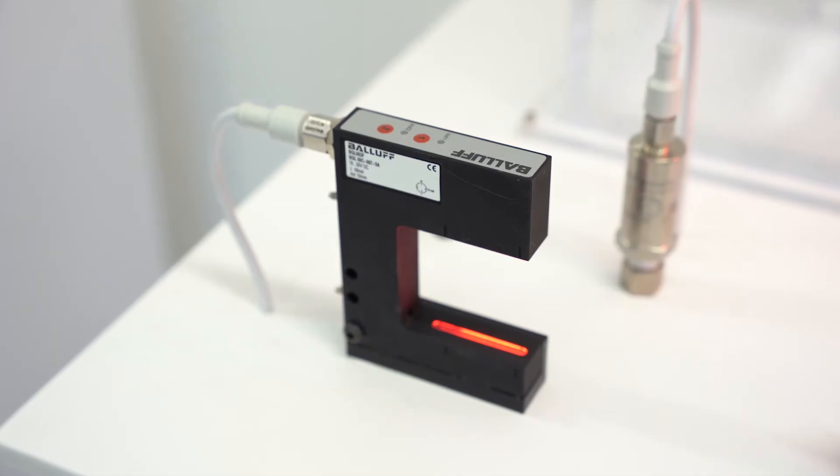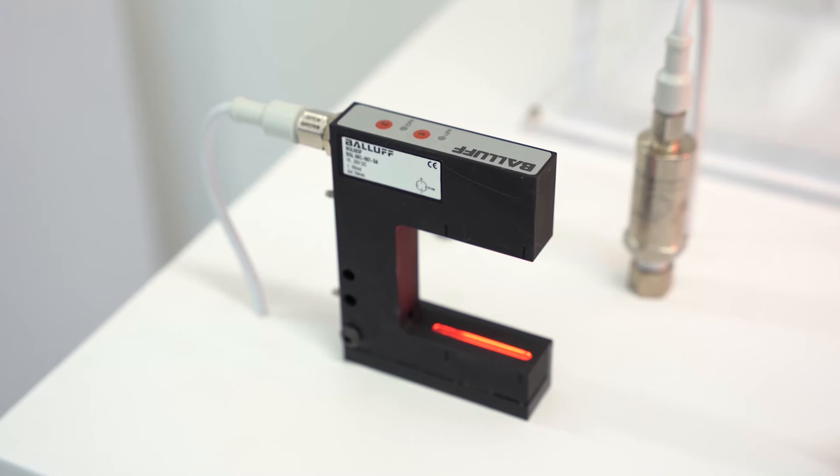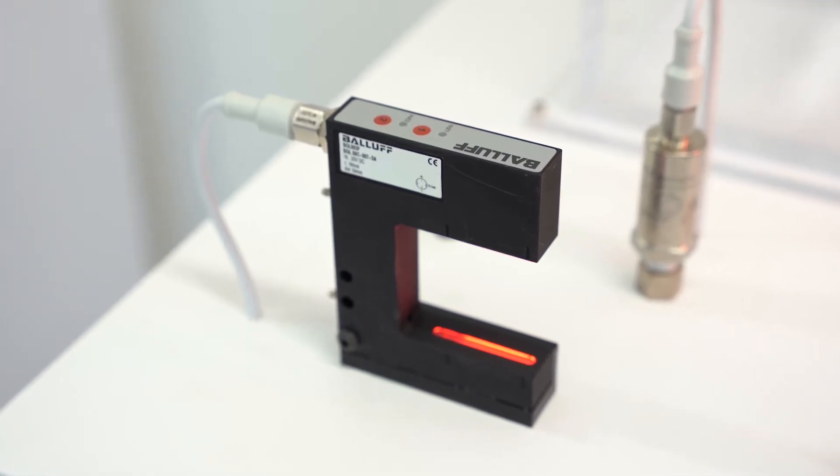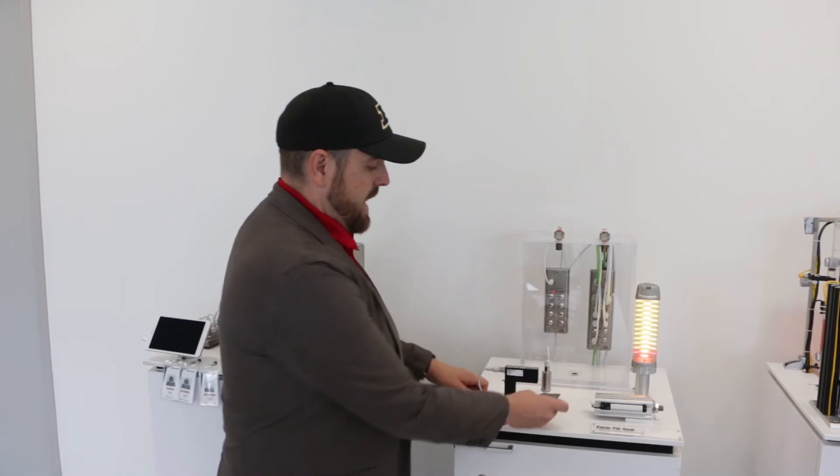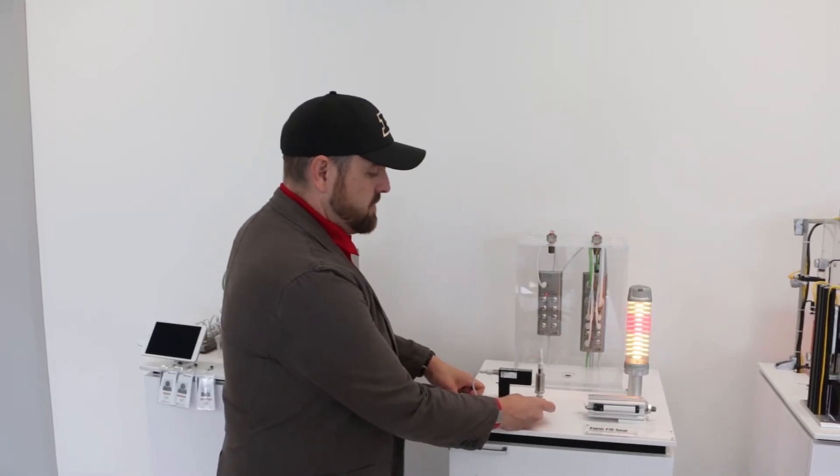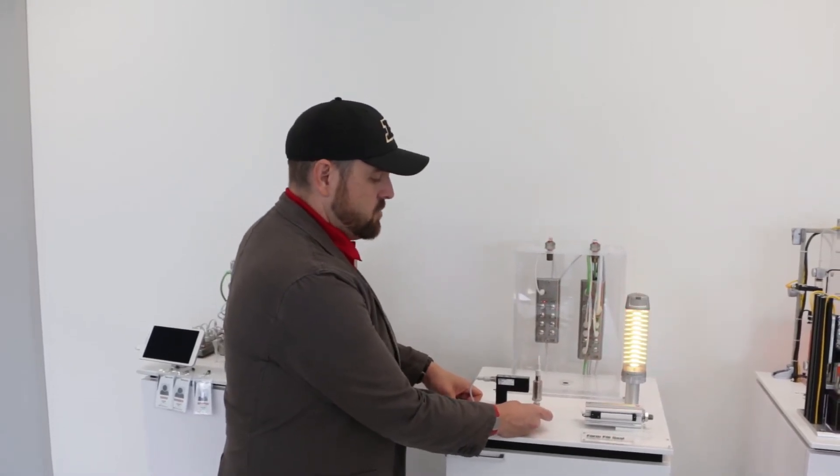The second application I want to show you here is an edge guide sensor. This is a special self-contained through-beam fork that has a light curtain, and the light curtain, as we cover up that material, we can get a position if we're too far left or too far right.